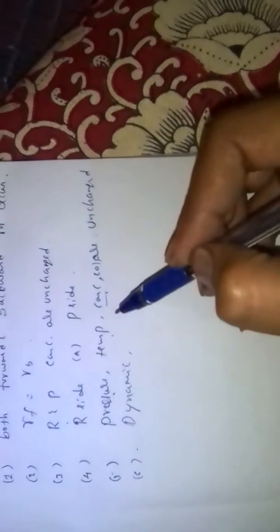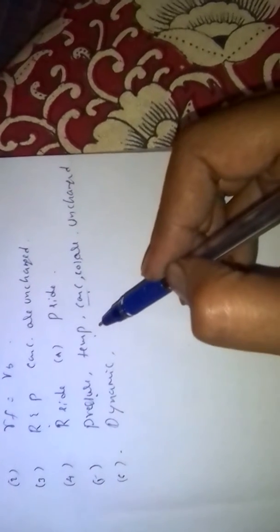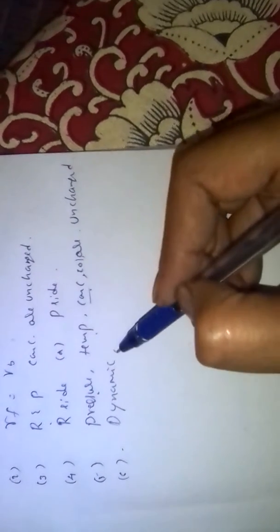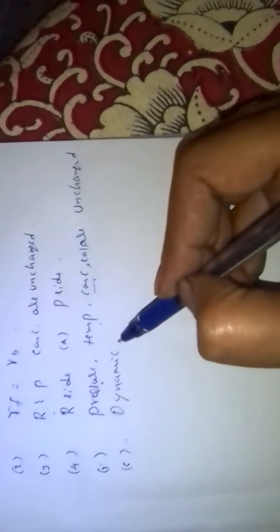Equilibrium is dynamic in nature. That means at equilibrium state also, both forward and backward reactions are taking place. Dynamic means not static.